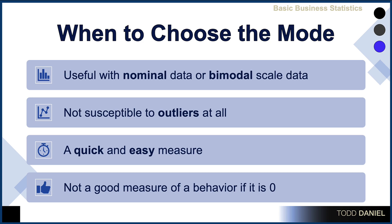No matter how many or how extreme they are, outliers will never affect the mode. The mode is also a quick and easy measure. It can be accomplished very readily and can be done with statistical software.